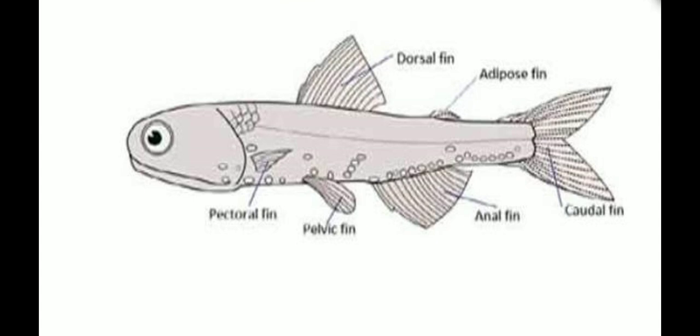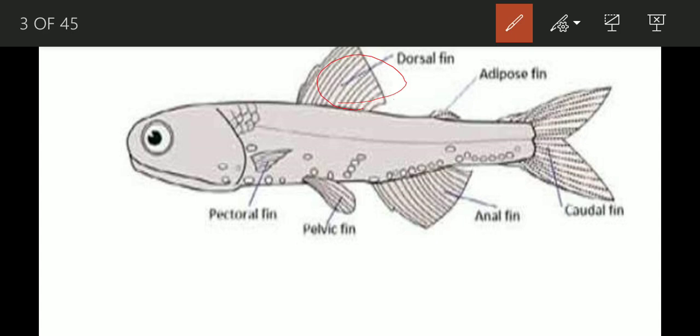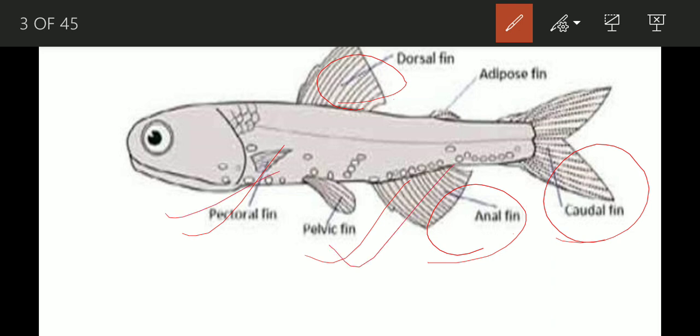In the diagram, you can see the dorsal fin, the median fin, the caudal fin, and the anal fin. For the paired fins, you can see the pectoral fin and the pelvic fin.